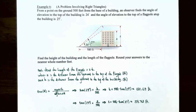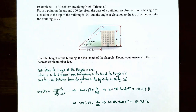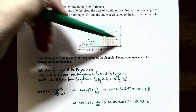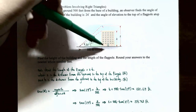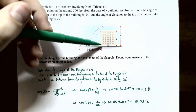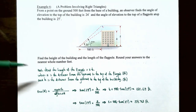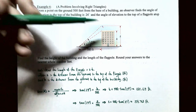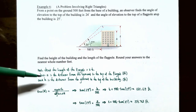Since the person is 500 feet from the base of the building, we can use the tangent function. For the 24-degree angle, the height of the building H is the opposite side and 500 feet is the adjacent side, so tan(24°) = H/500. For the flagpole, if K is the height from the ground to the top of the flagpole, then tan(27°) = K/500. The length of the flagpole is K minus H.